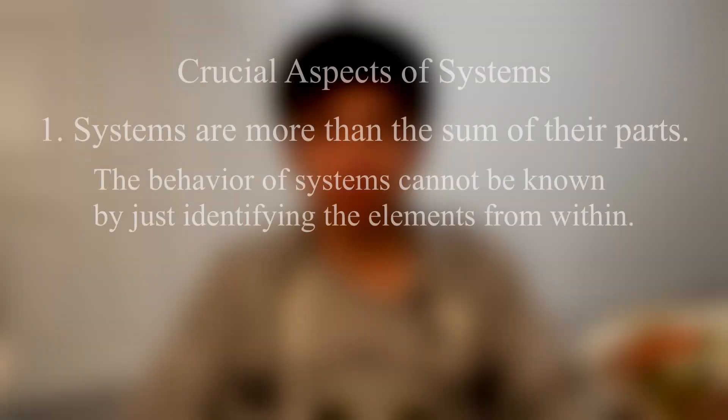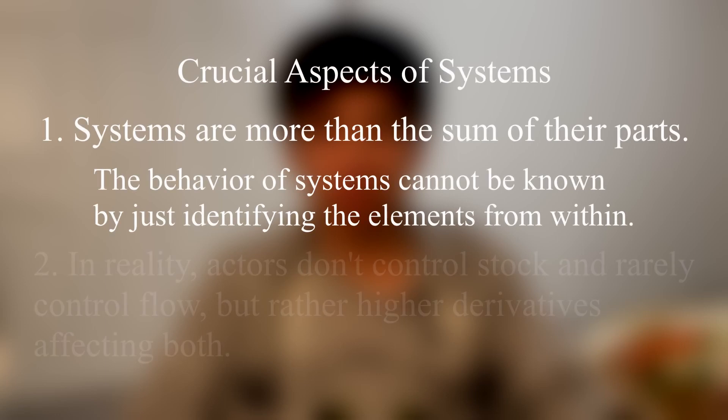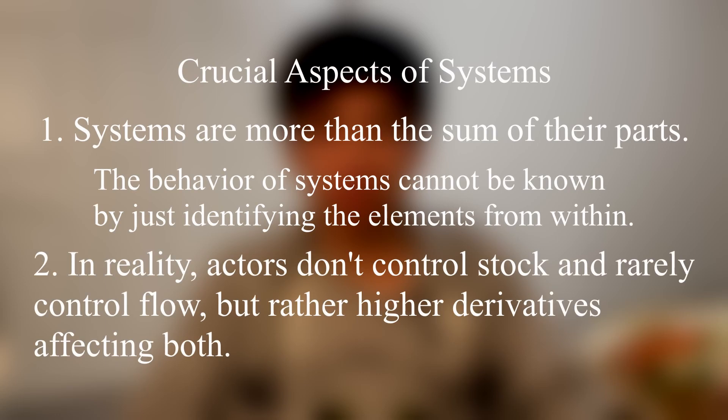Another observation is that in reality, actors like people don't control stock and rarely control flow, but rather affect higher derivatives affecting both. If you want to drain a bathtub, you don't just make the water disappear — you open the drain and let the water out. You never directly change the stock. Instead, you manipulate the flow.